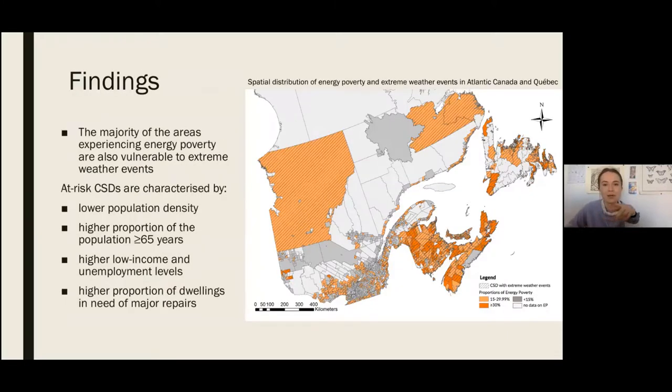So for my findings, you can see on the right, the map that I made to illustrate the spatial distribution of these two issues. So in the orange, there's the different prevalences of energy poverty. The darker orange is for a higher prevalence. And then the diagonal lines show extreme weather events. And so the overlap of the two are what was considered at-risk census subdivisions. So as you can see, the majority of the areas experiencing energy poverty were also vulnerable to extreme weather events. And these areas were characterized by a lower population density, so they were more rural, a higher proportion of the population being over the age of 65, higher low income and unemployment levels, as well as a higher proportion of dwellings in need of major repairs. So all in all, all these characteristics make these communities more vulnerable and less resilient to both extreme weather events and energy poverty.